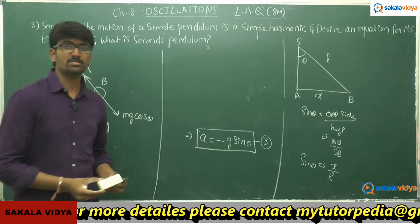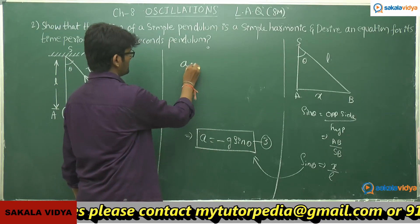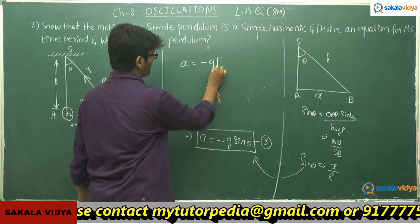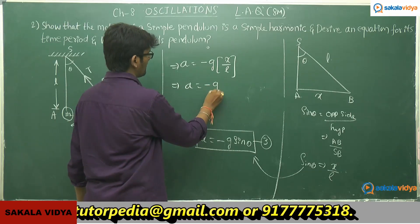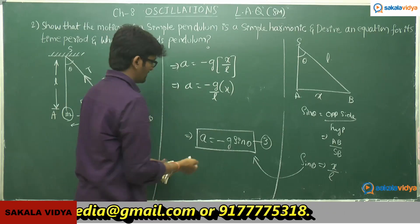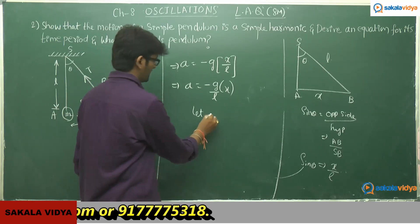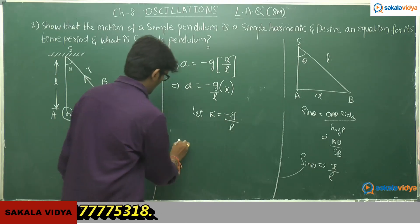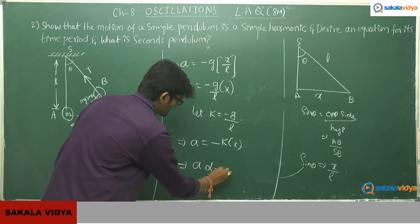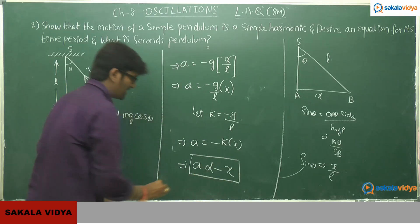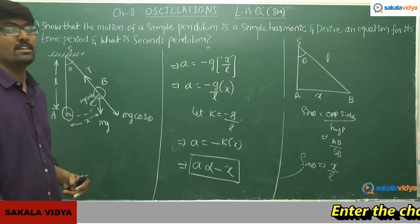Substituting sinθ = x/L into equation 3: a = −g(x/L), which gives a = −(g/L)x. Applying the proportionality constant k = g/L, we get a = −kx, meaning a is directly proportional to −x. Since acceleration is proportional to displacement (with negative sign indicating direction back to mean position), we have proven that the oscillations of a simple pendulum constitute simple harmonic motion.